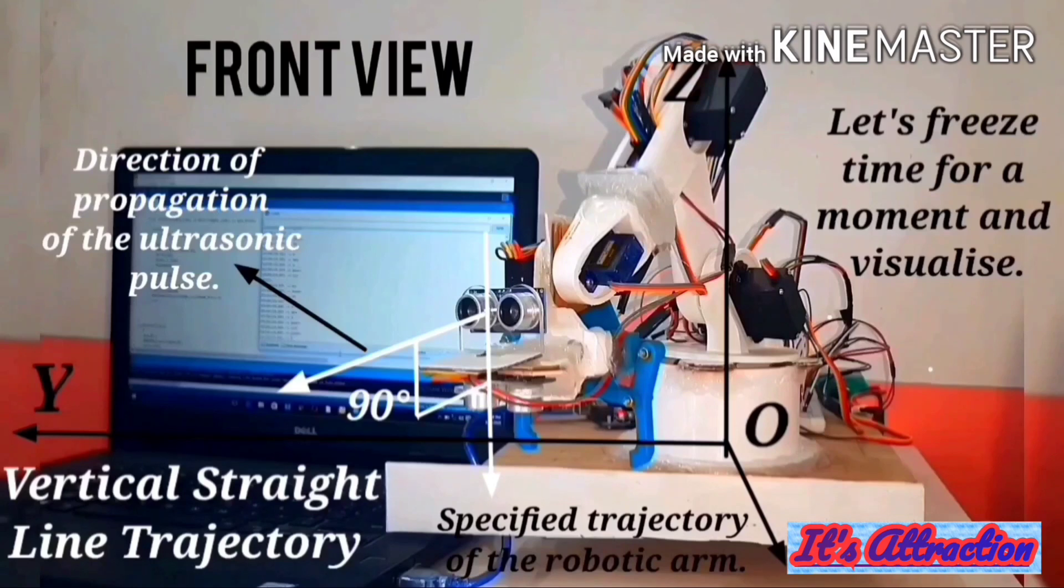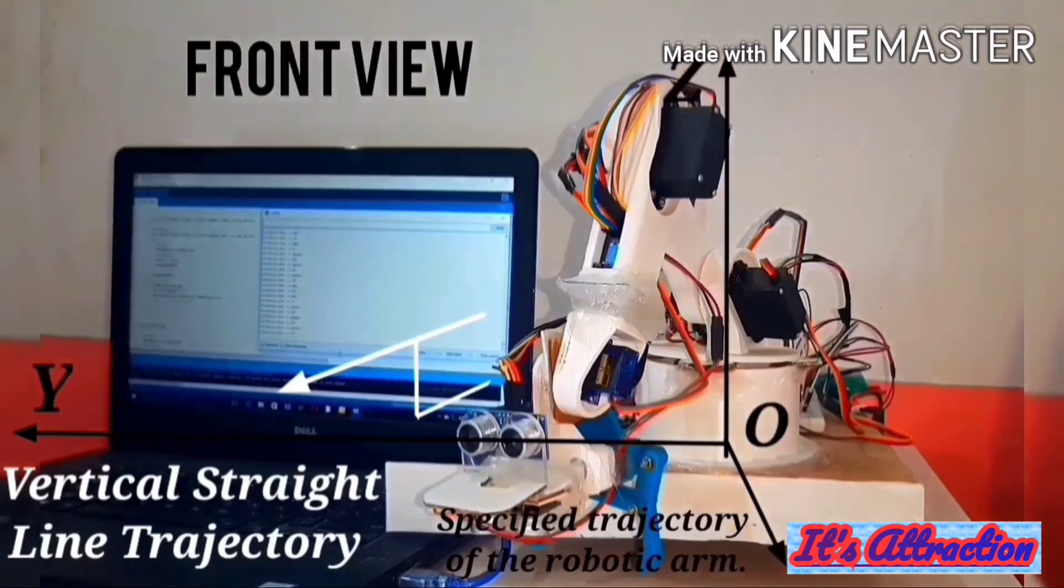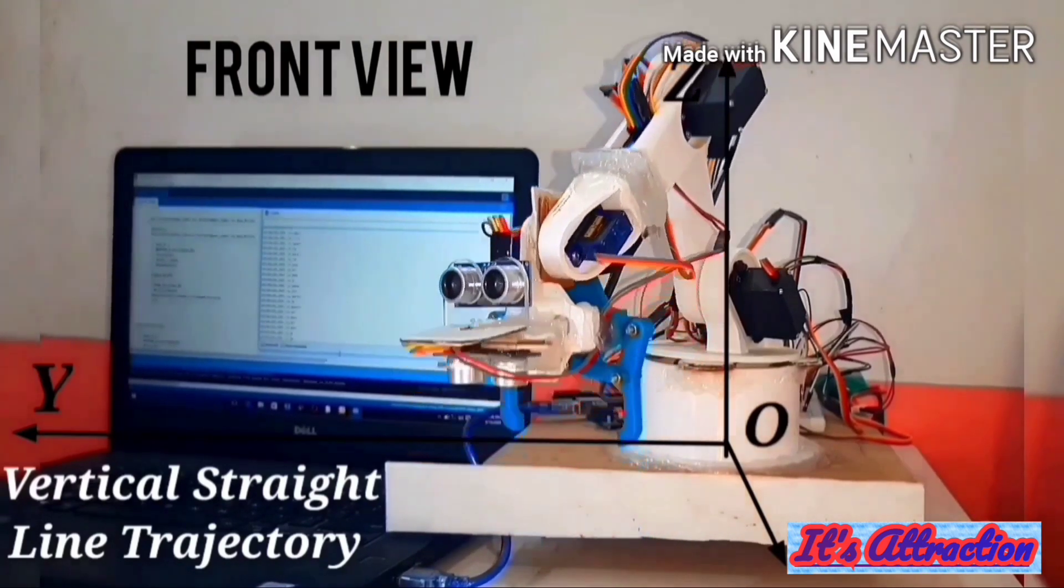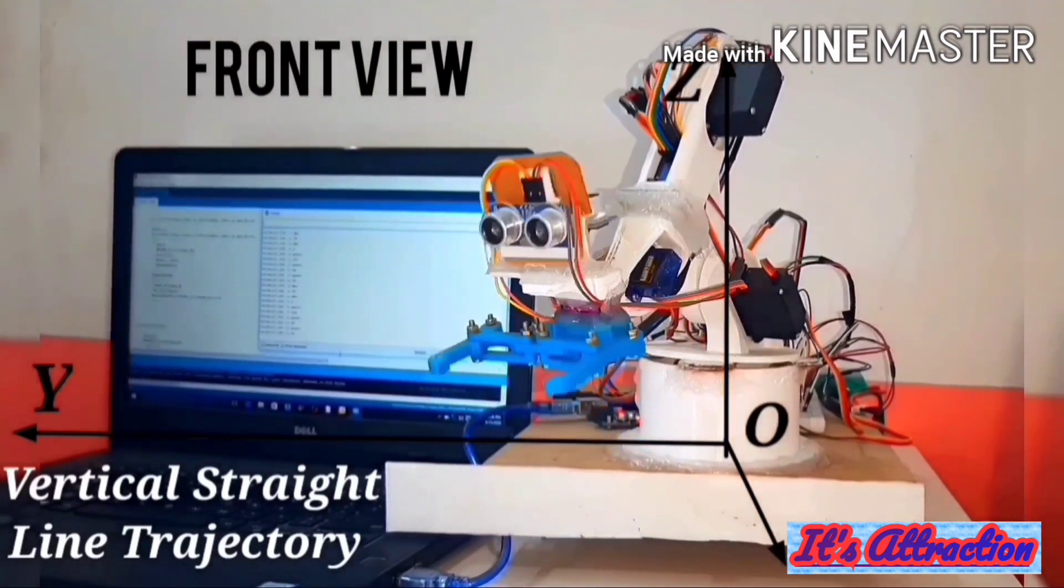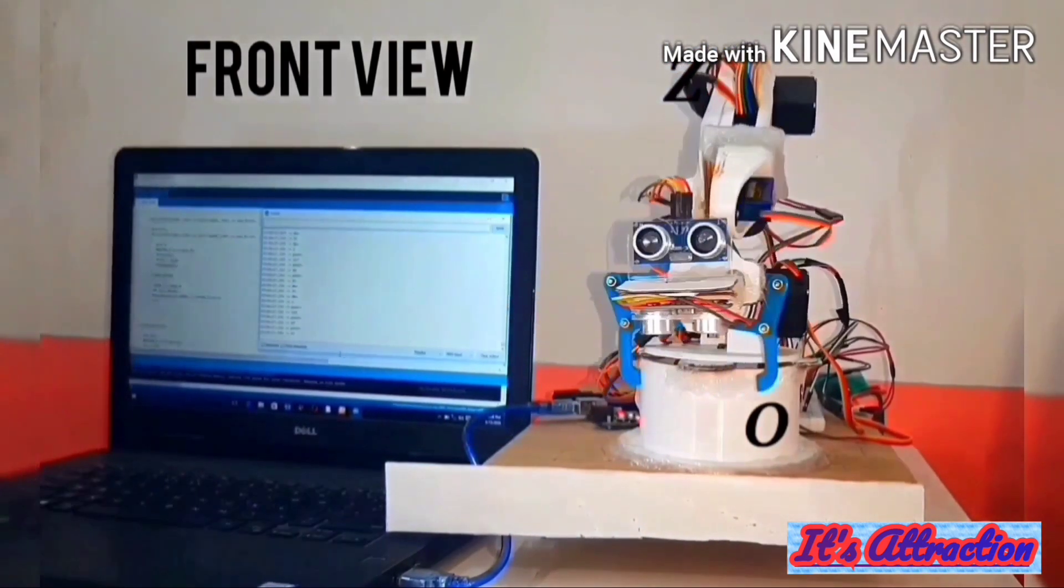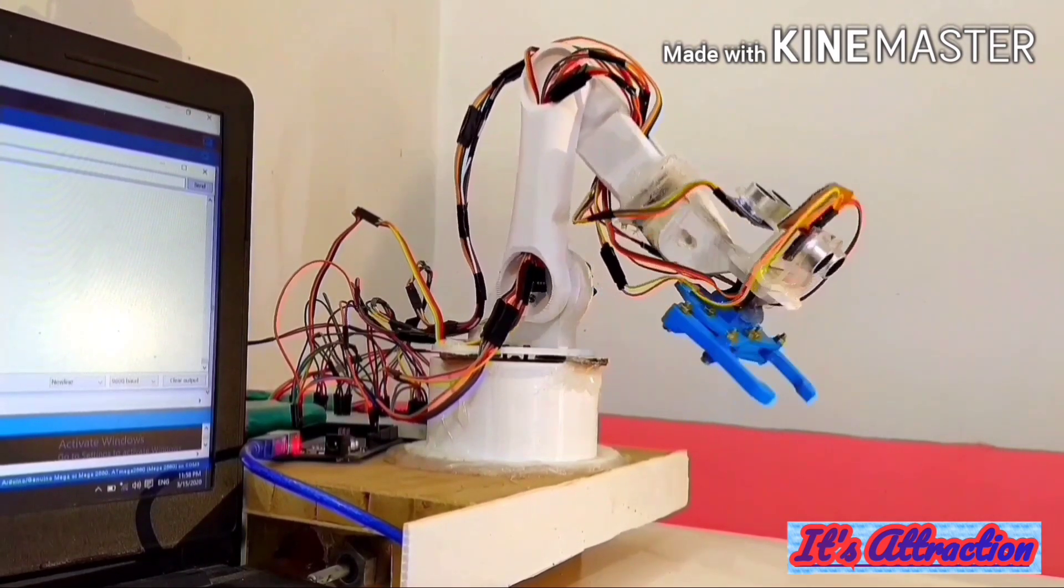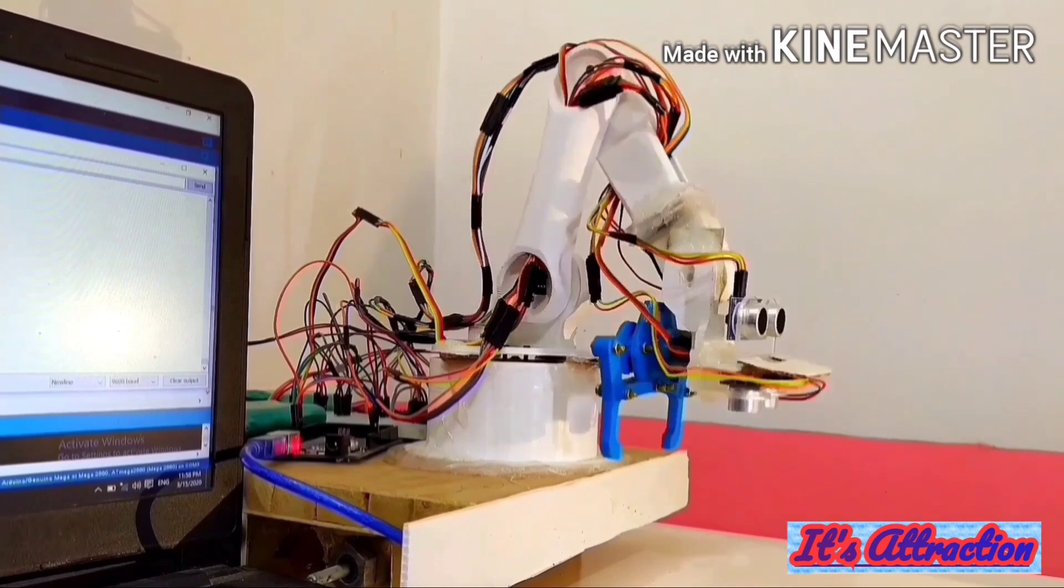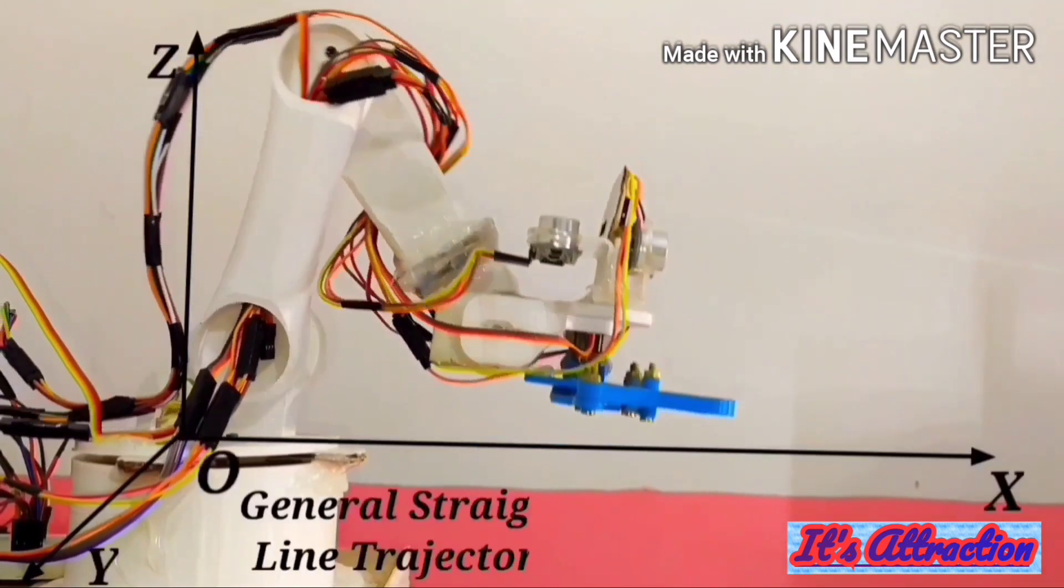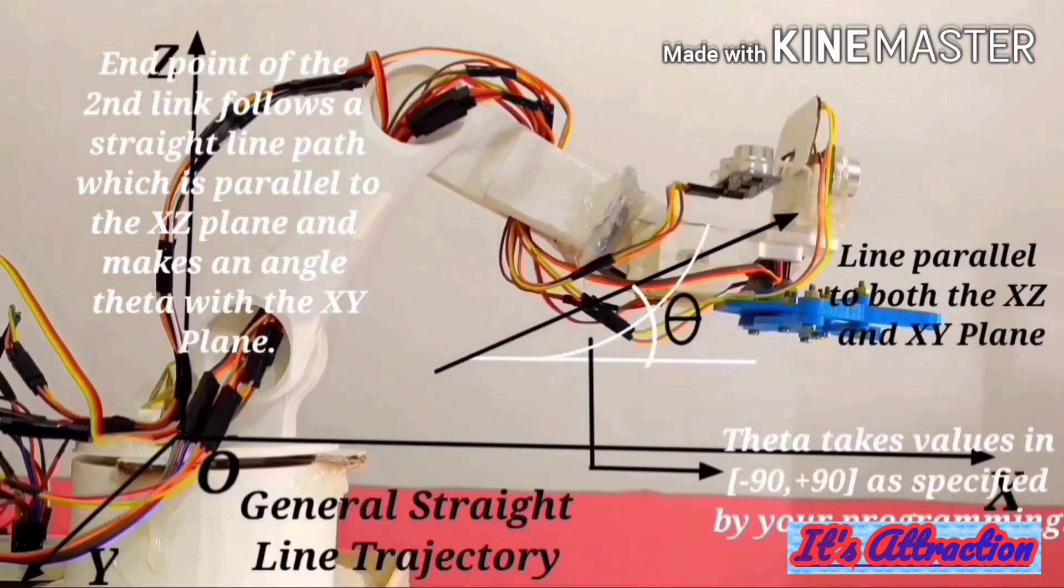Apart from the horizontal straight line and vertical straight line trajectories, this robotic arm can also follow general straight line trajectories in space using the trajectory planning algorithm. Let's freeze the motion of the robotic arm in space for a moment of time and visualize the actual trajectory that has been executed in space.